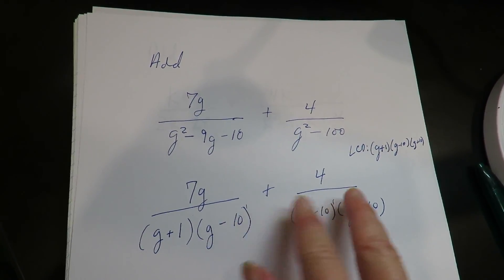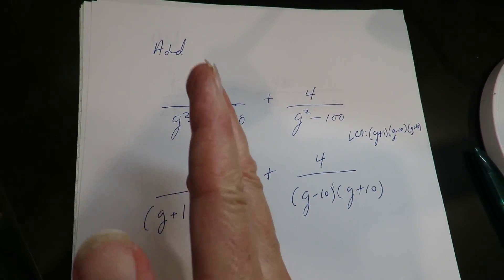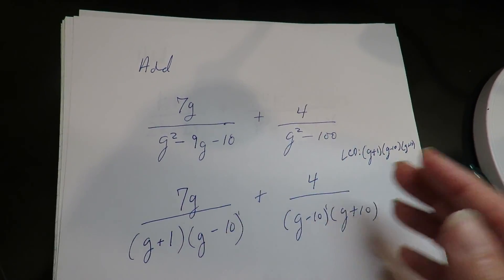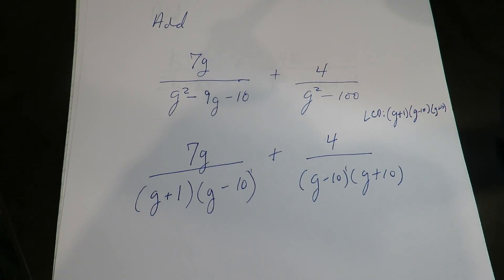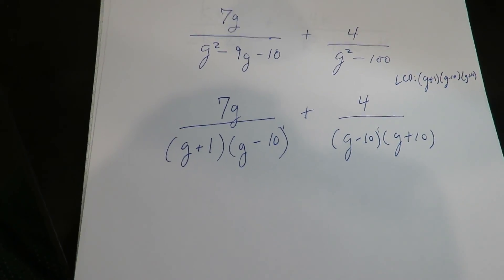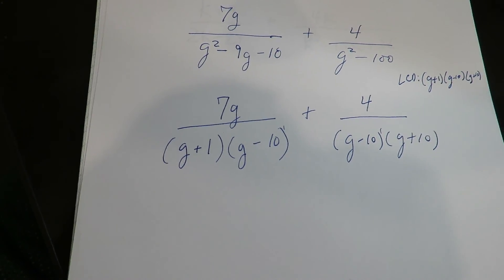You don't combine things to make the LCD. Like if I have two of these, I don't have two here. Just because I have at most one here, at most one here. So I need at most one in the LCD. It's like everybody just has to have the same amount.